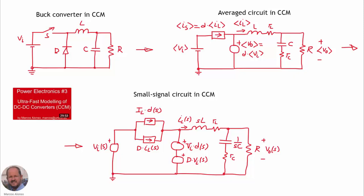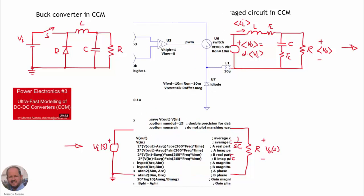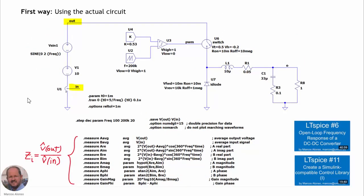Coming back to the overview, we can see the three possibilities to model the converter: we can use the actual converter, the average circuit, or the small signal circuit. This is the reason why we have three possibilities to measure the input impedance by simulation. We can simulate the actual converter with all the information, the average circuit with only average magnitudes, or the small signal circuit with information only on the perturbations.